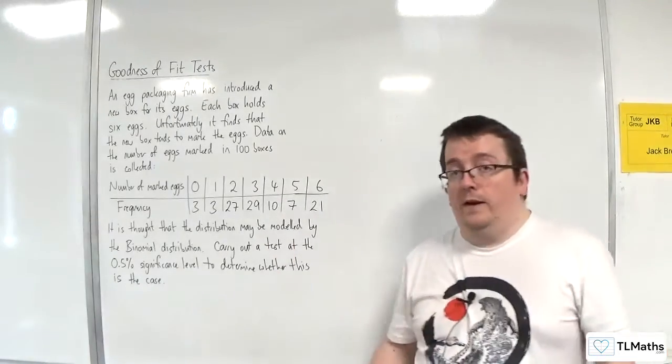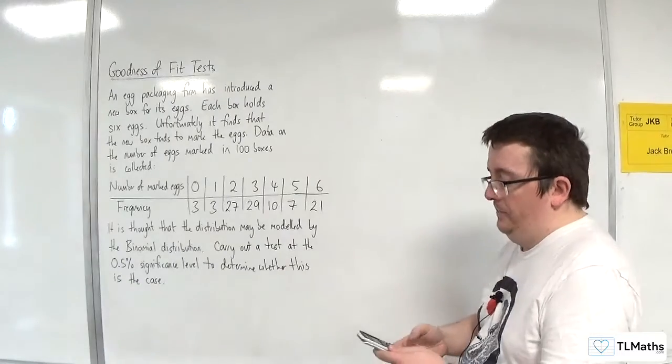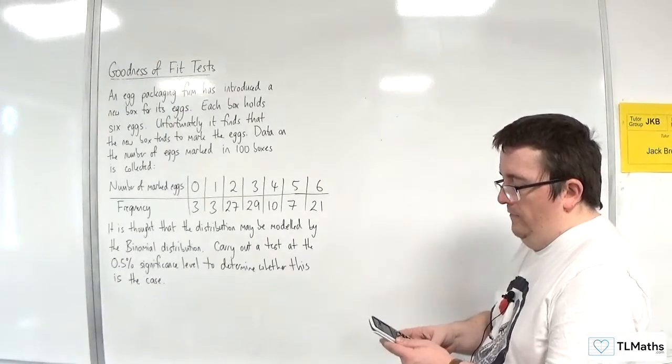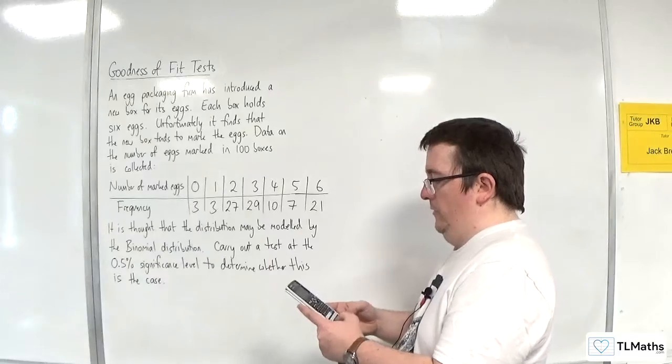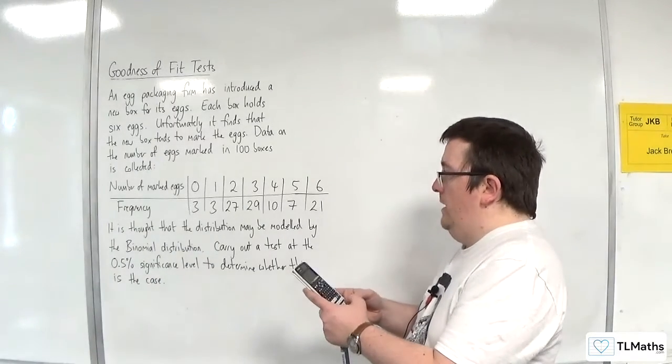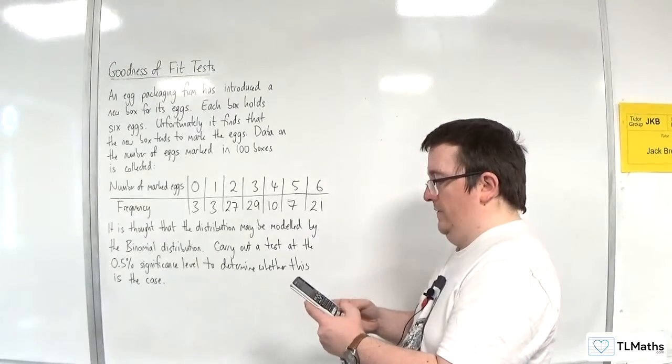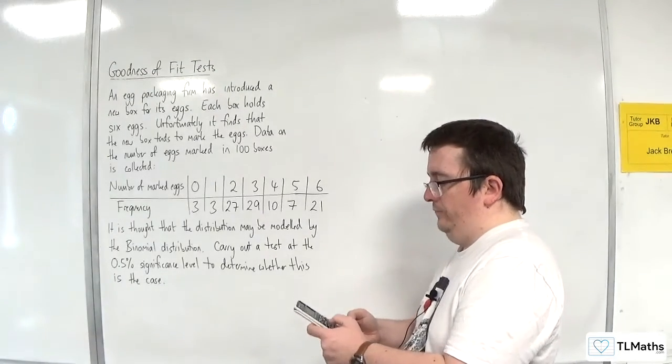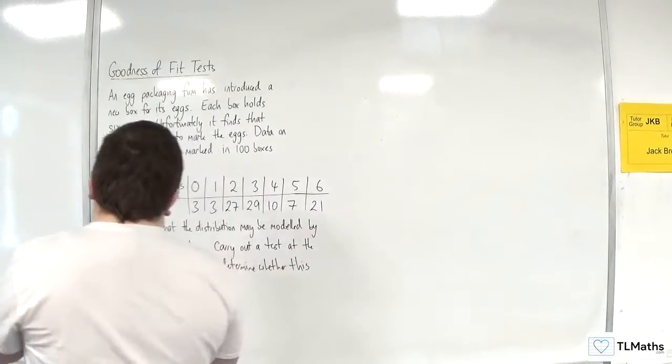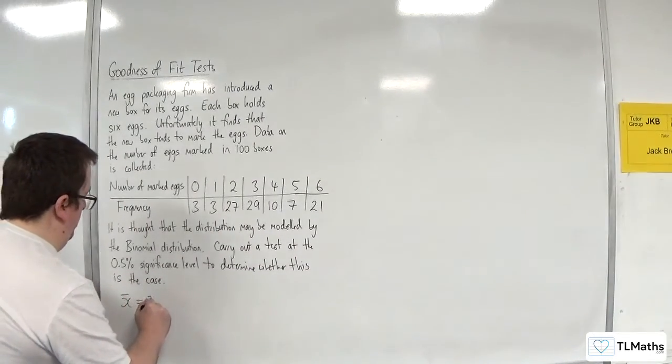So what we'll do first is we will estimate the mean from this data. Menu number 6, one variable. Let's type it in: 0, 1, 2, 3, 4, 5, 6, 3, 3, 27, 29, 10, 7, 21. We get a mean of 3.45. So x bar is 3.45.